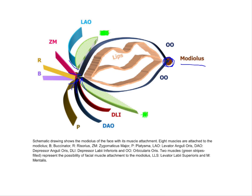The modiolus is present at the corner of the mouth where fibers from various muscles come and intersect, acting as a node. There are eight muscles that intersect at the modiolus: levator anguli oris, zygomaticus major, risorius, buccinator, platysma, depressor anguli oris, depressor labii inferioris, and orbicularis oris.